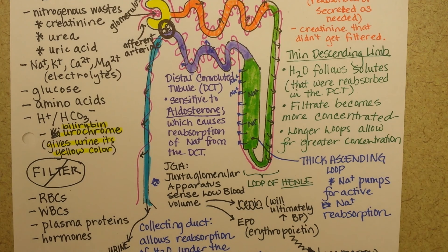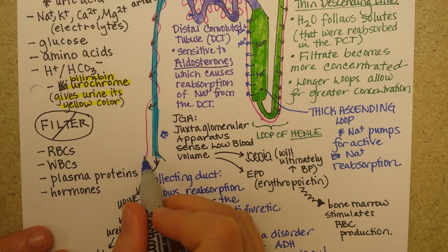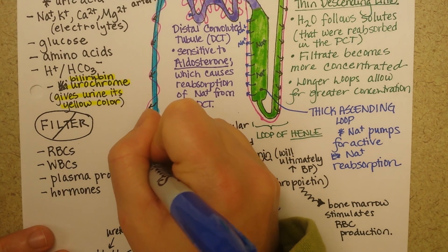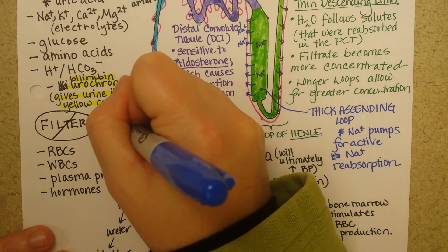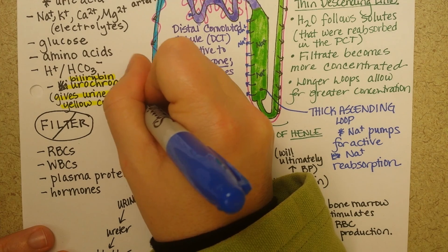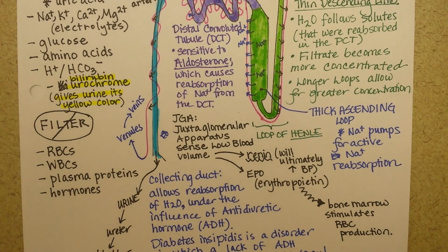Alright, I think I got in everything I wanted to on this page. Do you see at the bottom here these peritubular capillary beds? Well, what they then become are venules, and then veins, and then eventually go back to the vena cava and rejoin the blood supply. So the blood supply has gone all the way through the kidney and then back out again. Talk to you later.